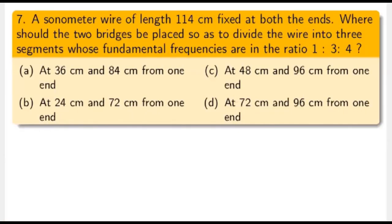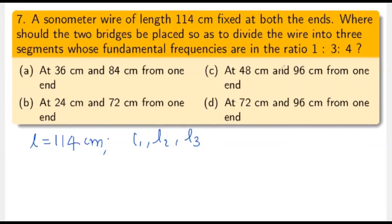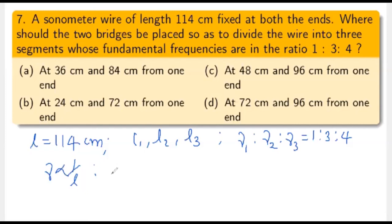Next question: a sonometer wire of length 114 centimeters is fixed at both ends. Where should two bridges be placed to divide the wire into three segments whose fundamental frequencies are in the ratio 1:3:4? The total length is 114 cm, divided into L1, L2, L3 such that ν1:ν2:ν3 = 1:3:4. Since frequency is inversely proportional to length, the ratio of lengths is L1:L2:L3 = 1/1 : 1/3 : 1/4.